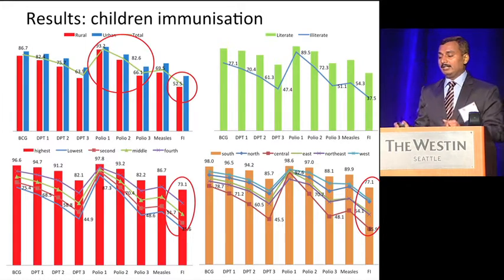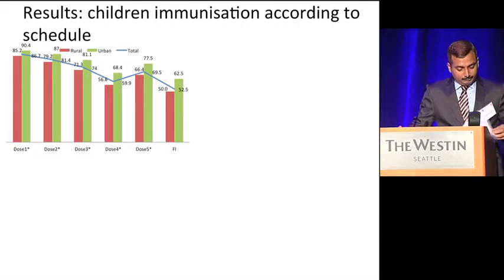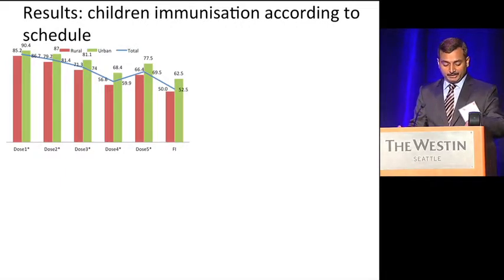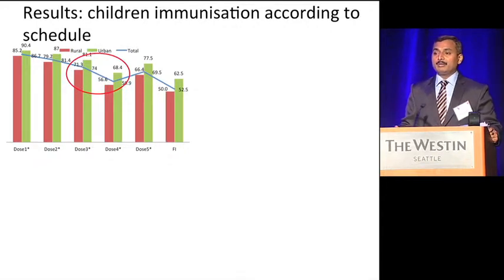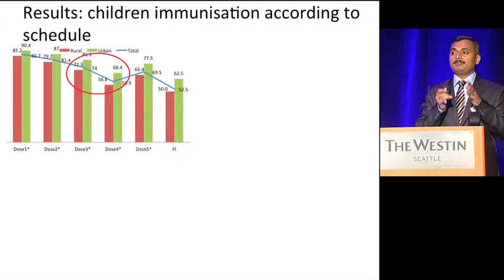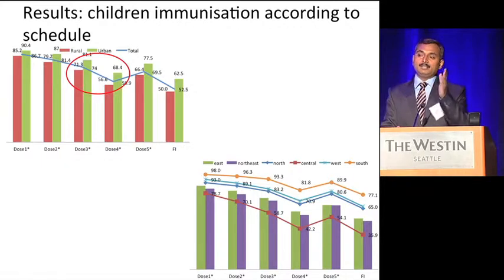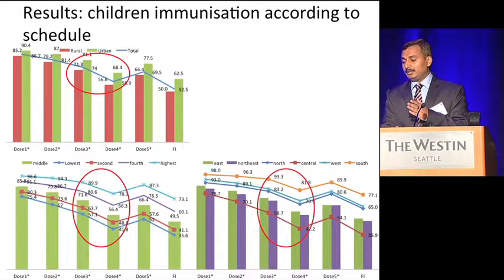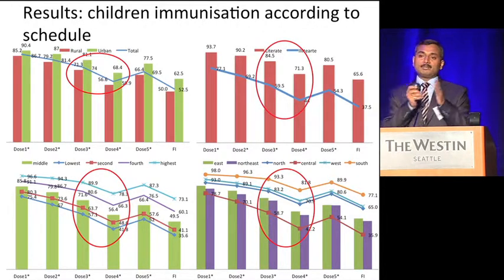Looking at immunization according to schedule, at the national level the pattern is largely consistent, but there is a notably larger gap between Dose 3 and Dose 4. This difference is also observed by geographic region, by wealth quintile of the household, and by mother's education.